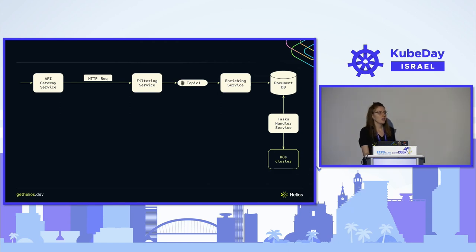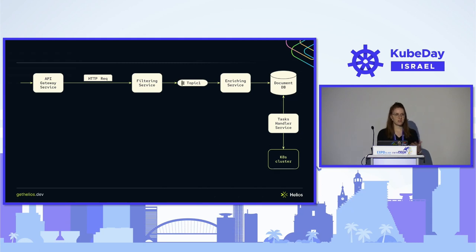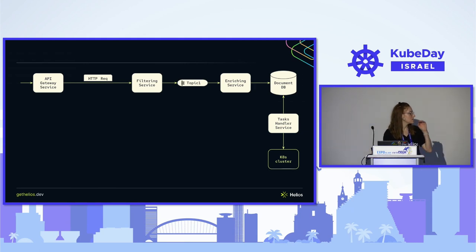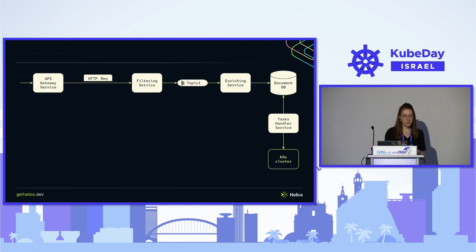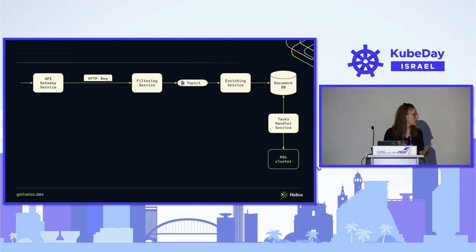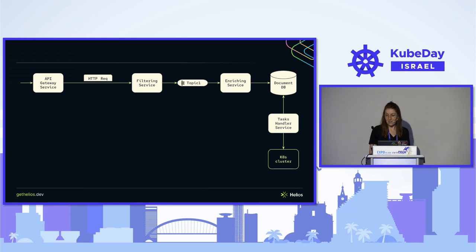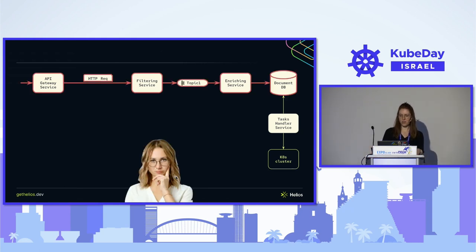Her team is working with microservices, as is very popular. This is an overview of her system: you have multiple microservices, HTTP communication, communication via Kafka messaging where one service writes messages and another consumes them, reading and writing from a document DB, and a final service with some interaction with a Kubernetes cluster.